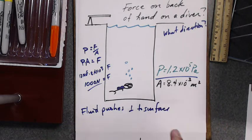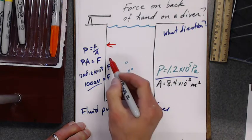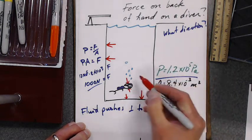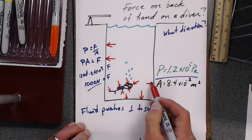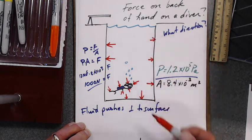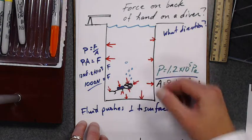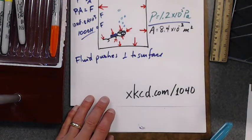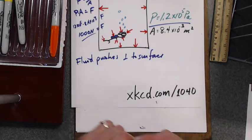A fluid pushes perpendicular to the surface in all directions — it's pushing that way, that way, that way, that way. Here's my diver: it's pushing up on his head, pushing that way, pushing this way. So on the back of his hand it's pushing all over the place. Fluids push perpendicular to whatever surface they're up against. That's why if you look at his head it looks like it's getting squeezed. To help out a bit, you should check out xkcd.com slash 1040 — somebody tell me what David Bowie and Freddie Mercury are doing down there.